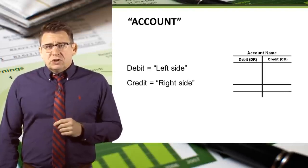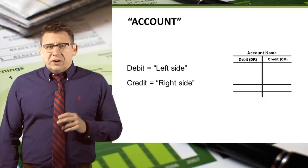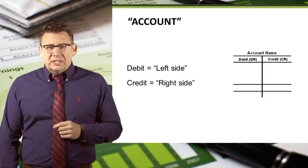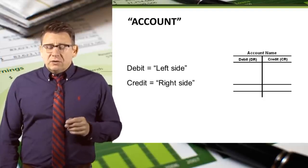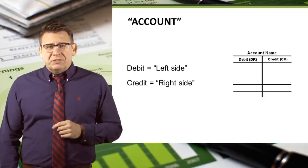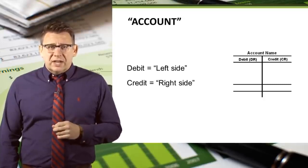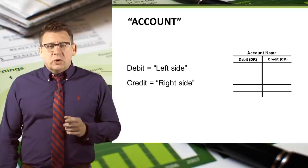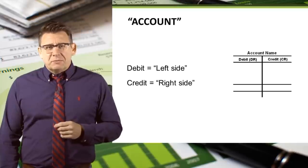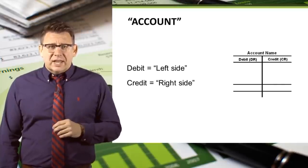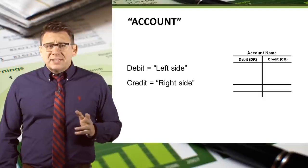Two additional terms that are very important in accounting are debit and credit. Debit, which is sometimes abbreviated DR, means left side of an account. And credit, which is sometimes abbreviated CR, means right side of an account. And that's it.